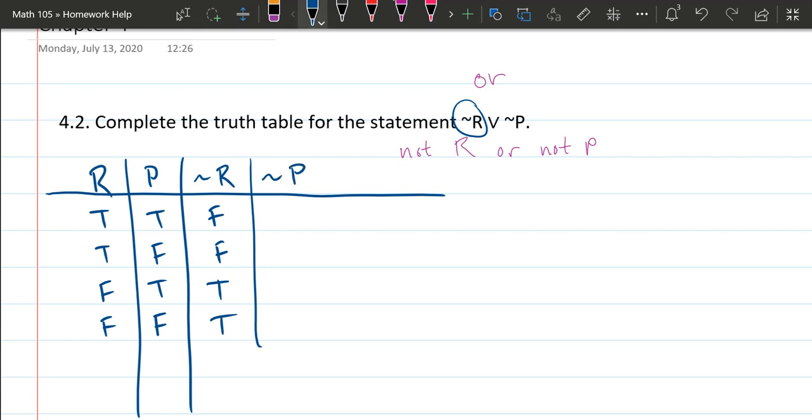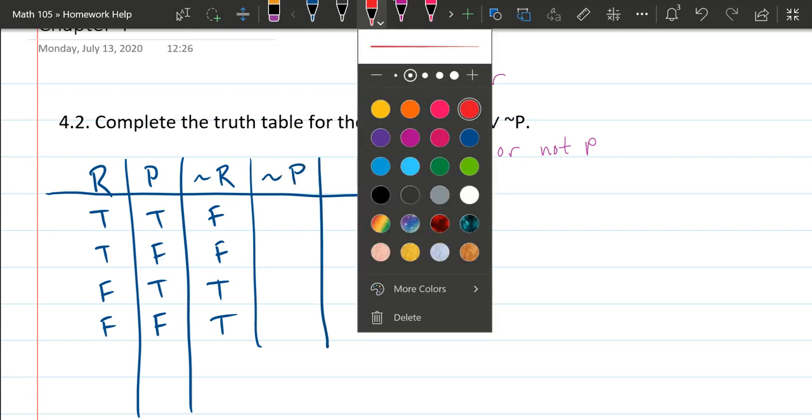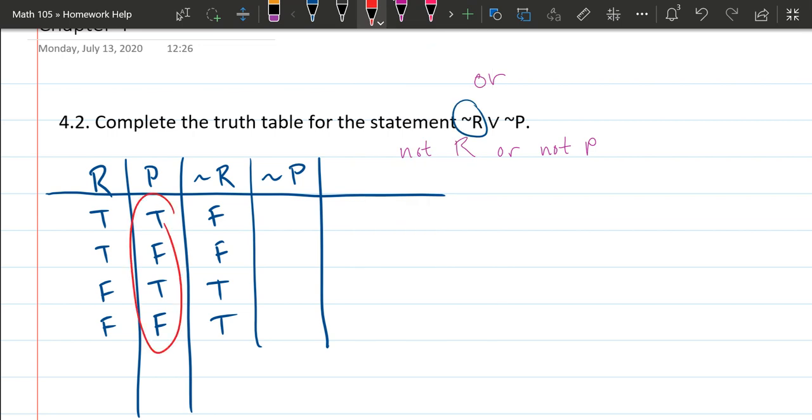Now we're going to do NOT P. Here we're looking at this P column and we're going to take the opposites again. The first one TRUE, the opposite will be FALSE. FALSE turns to TRUE, TRUE turns to FALSE, and the last FALSE turns to TRUE. That takes care of NOT R and NOT P.